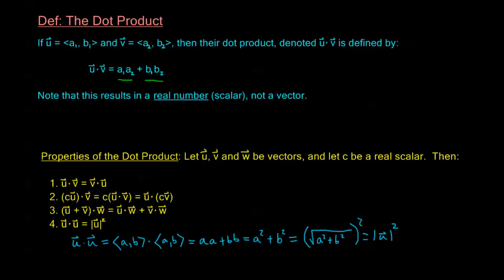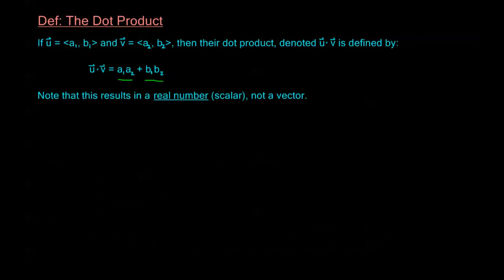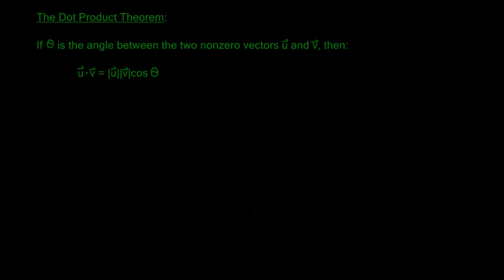We're going to use property 4 to prove our next theorem — the dot product theorem. If theta is the angle between two nonzero vectors u and v, then u dot v is equal to the magnitude of u times the magnitude of v times cosine theta.